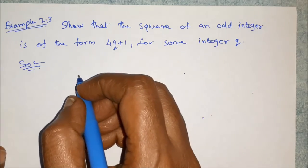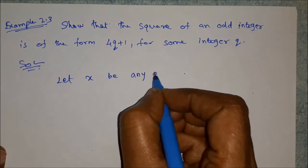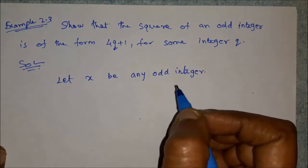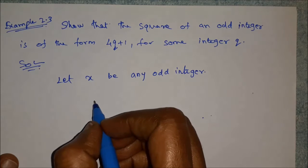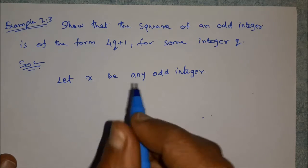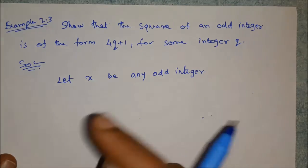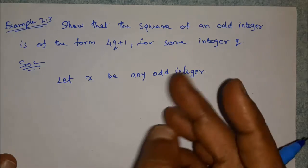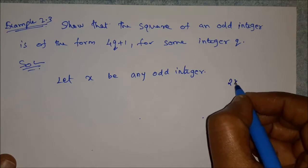Let x be any odd integer. Any odd integer is of the form: one more than an even integer. An even integer is of the form 2K, so an odd integer is one more than 2K.